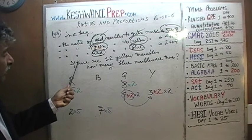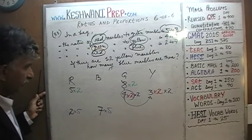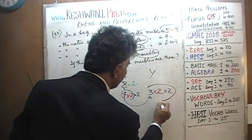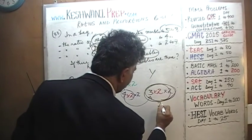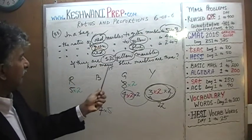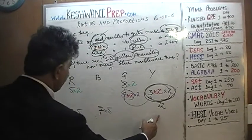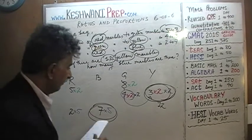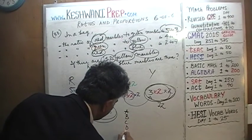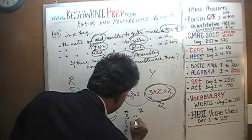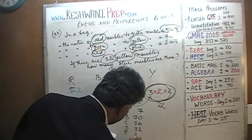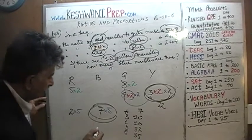If there are 12 yellow marbles in the bag, how many blue marbles must there be? We have 12 yellow marbles right here in our table — that worked out perfectly. So we must have 35 blue marbles. The answer choices were 7, 10, 16, 32, and 35. The answer is 35.